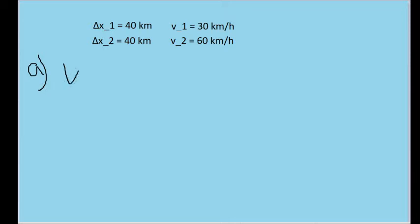Our average velocity formula is equal to the distance traveled — or delta x — divided by the time elapsed over that motion. Now we have the total distance traveled, which is given as 80 kilometers, because 40 plus 40 is 80 kilometers. But we're still missing the time.